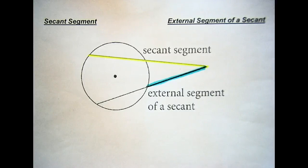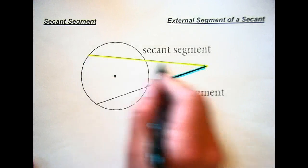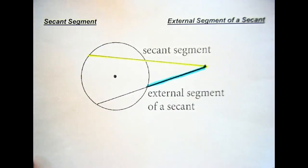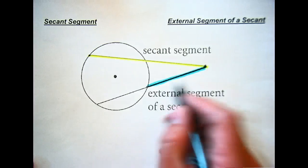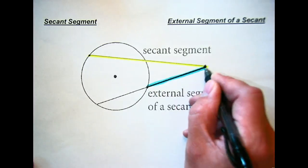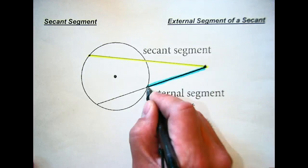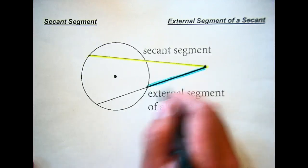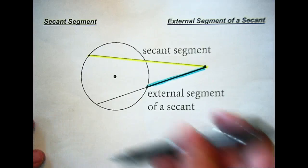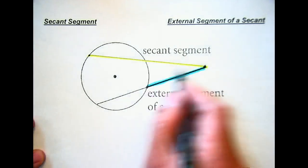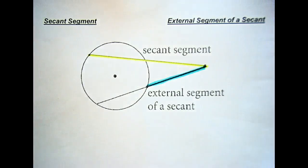Next we have a secant segment and external segment of a secant. The secant segment is where you have a secant and from that point outside the circle to where it hits the second point on the circle — that's your secant segment. The external segment of a secant is just the outside part, from that point outside the circle to where it hits the outer edge of the circle. We're dealing with two different secants here, so this one has an external segment out here as well.